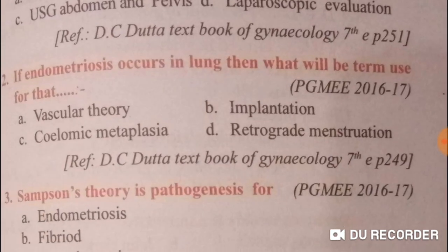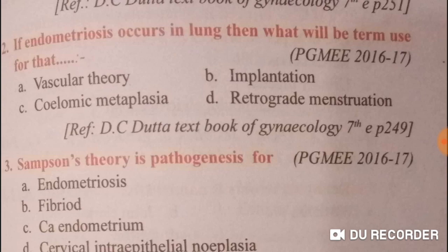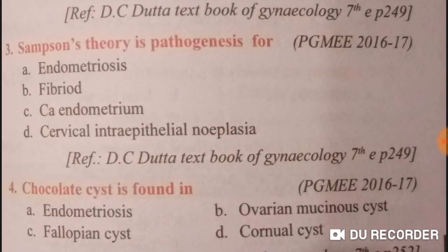If endometriosis occurs in the lung, what term is used for that? That is the vascular theory — option A is right.